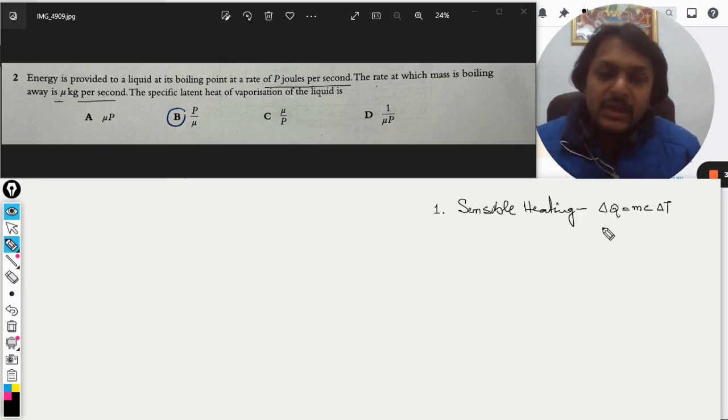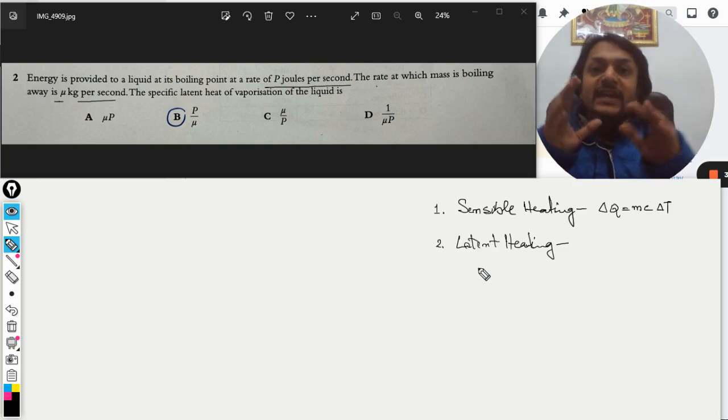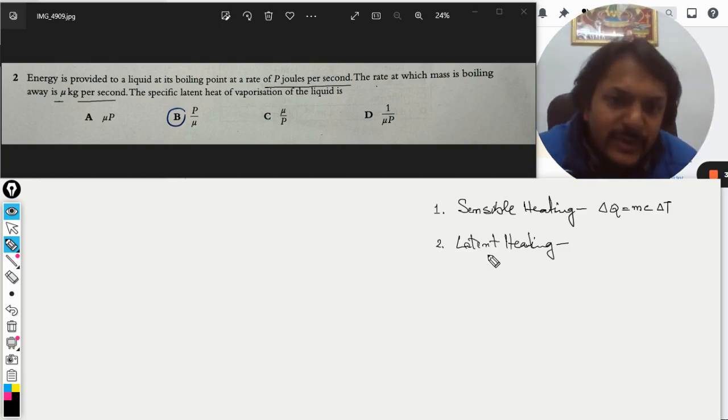Now there is another kind of heating which is known as latent heat. Latent heating is that heating in which heat is definitely absorbed by the substance but the temperature does not change. So what happens? Phase change takes place.